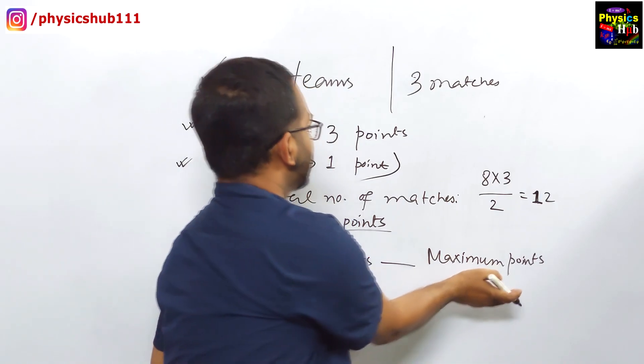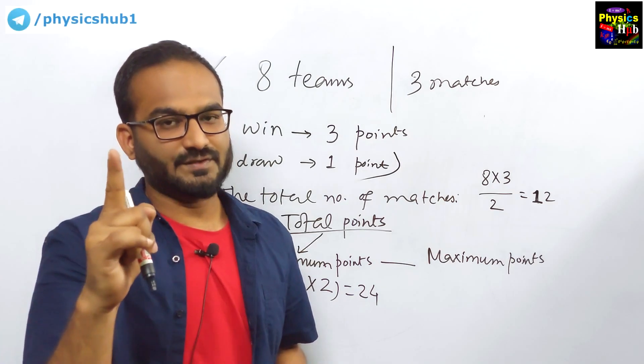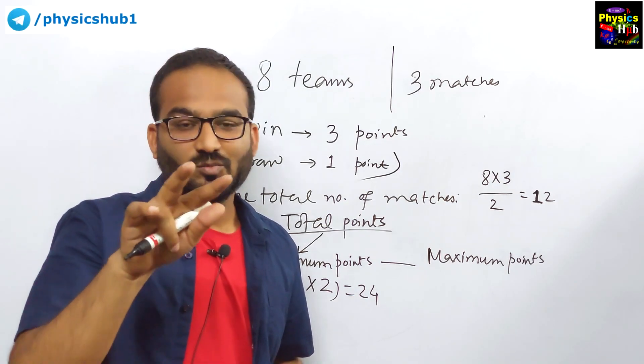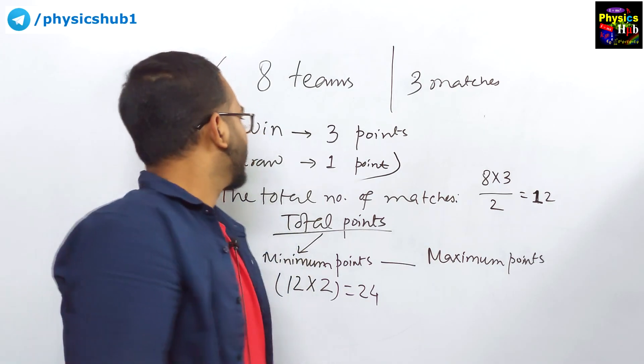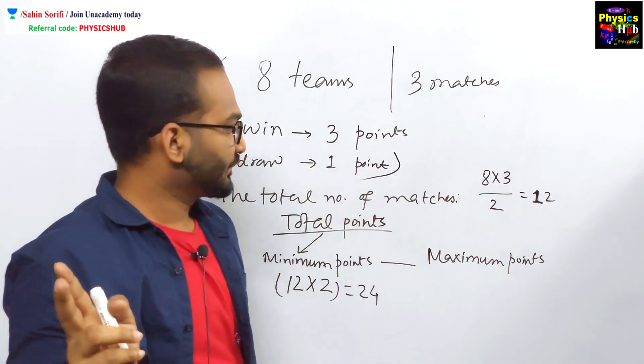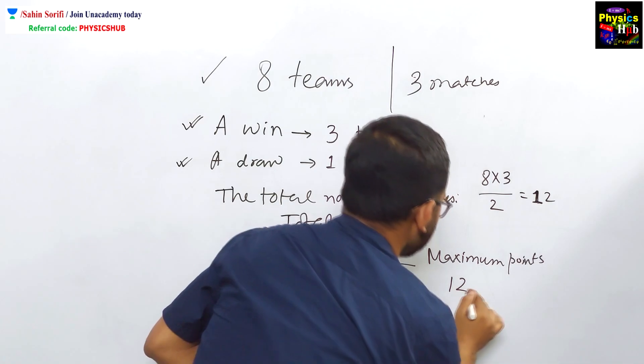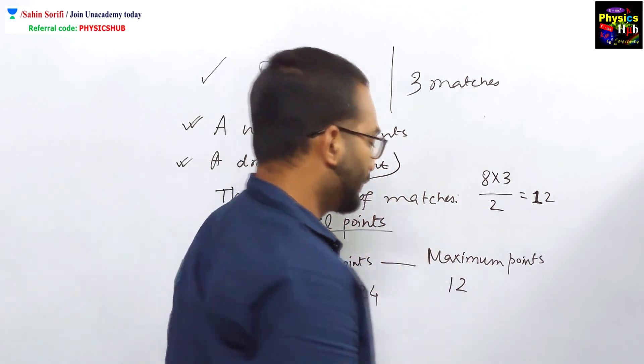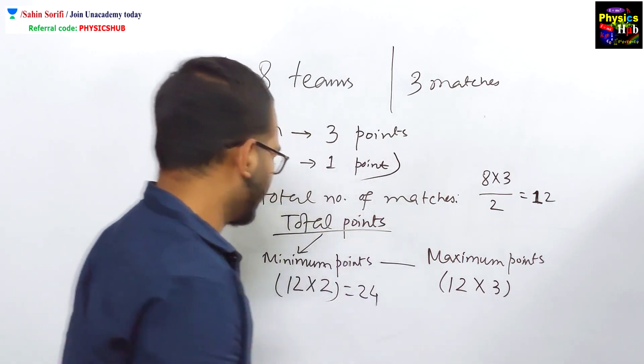Now, for maximum points, look, out of two teams, only one team wins. And when it is draw, both the teams are in a win-win situation. Both the teams will get one. But when there is a clear win, only one team will get three points. So, for the maximum points, out of 12 matches, only the winner will get three points. So, 12 × 3. Okay. Understood.